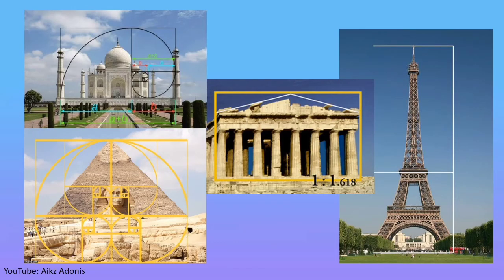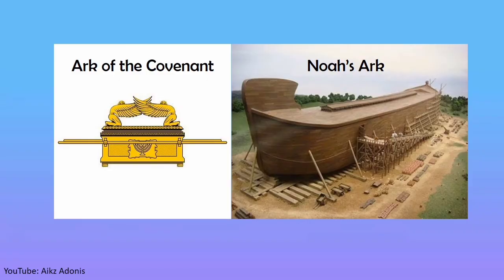Many marvelous architectural works like the Parthenon, Taj Mahal, Roman Arches, Egyptian Pyramid, Eiffel Tower, and many more were built based on the golden ratio. Even in the Bible, in Exodus 25:10, God commands Moses to build the Ark of the Covenant, the home to his covenants with the Israelites, and even the Ark was built from the golden ratio.